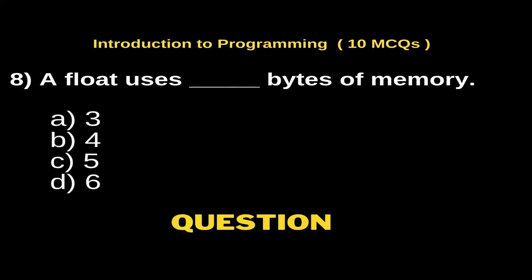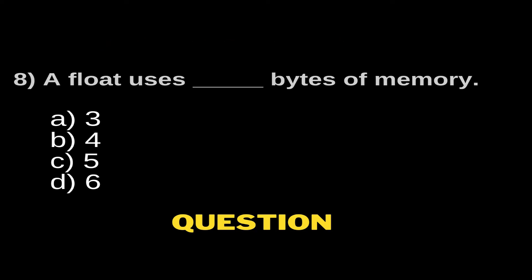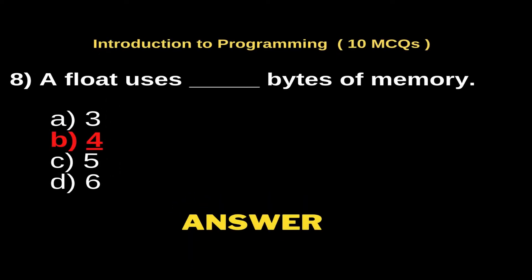A float uses dash bytes of memory. Option A, 3; Option B, 4; Option C, 5; Option D, 6. And the right answer is Option B, 4.